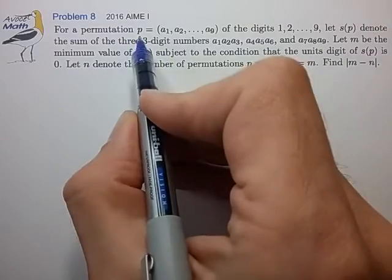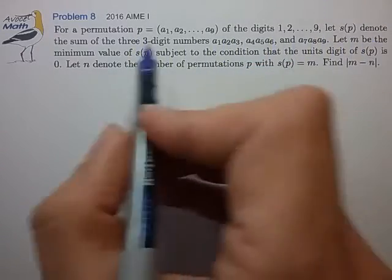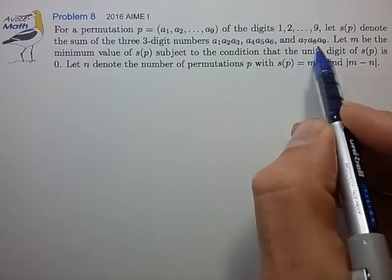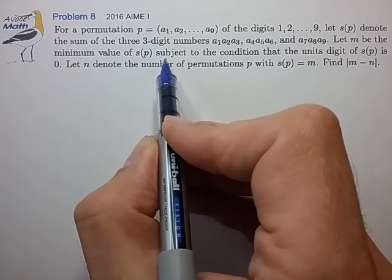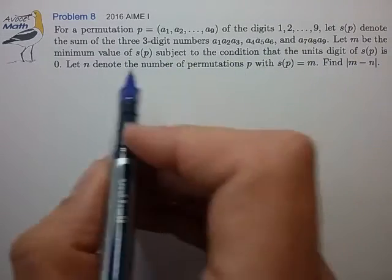For a permutation p = (a₁, a₂, ..., a₉) of the digits 1 through 9, let s(p) denote the sum of the three 3-digit numbers a₁a₂a₃, a₄a₅a₆, and a₇a₈a₉. Let m be the minimum value of s(p) subject to the condition that the units digit of s(p) is 0.